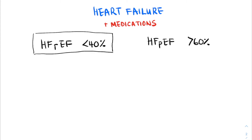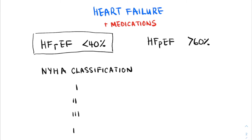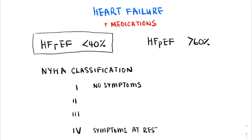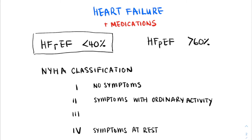After identifying the type of heart failure, we should also be able to classify a patient's heart failure symptoms, and we do so by the NYHA classification scale. Patients with NYHA class 1 symptoms have no symptoms with regular physical activity, whereas patients with NYHA class 4 symptoms have symptoms at rest. Patients who have some symptoms with just ordinary physical activity are considered class 2, whereas patients with symptoms with less than ordinary physical activity are considered class 3.